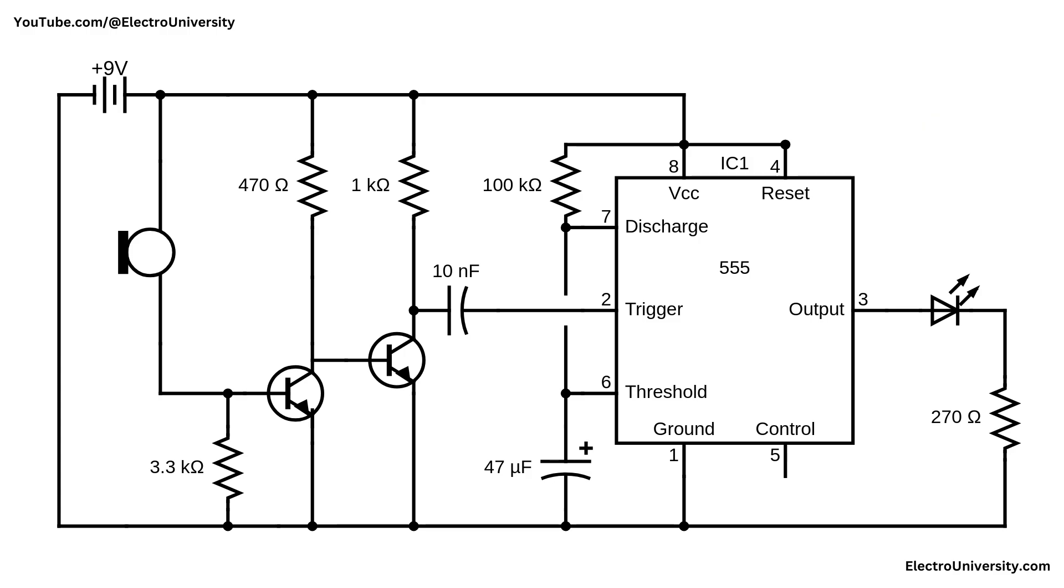When a clap is detected, the sound pulse causes the voltage at pin 2 to drop momentarily, triggering the timer. As a result, the output at pin 3 goes high and remains on for a duration determined by the connected 100 kilo ohm resistor and 47 microfarad capacitor, approximately 5 to 6 seconds.